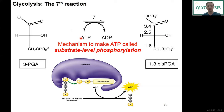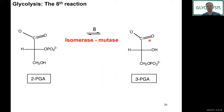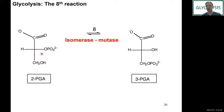After generating 3-PGA, which no longer has an acyl phosphate and is not as high in energy, we use isomerization again. We move the phosphoryl group from C3 to C2, generating 2-PGA. This isomerase reaction is called a mutase — simply moving a functional group within the molecule. Like previous isomerizations, this is fully reversible with little change in Gibbs free energy.